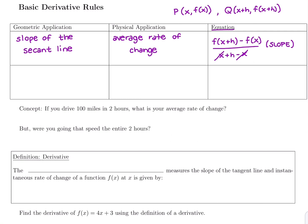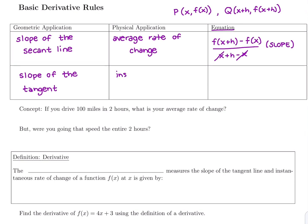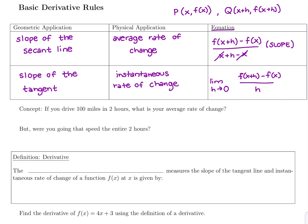Our second set of identical twins — one formula, two different names — is the slope of the tangent line, and we'll also see the term instantaneous rate of change. The formula is the same: f(x+h) minus f(x) all over h, but the difference is we let H go to zero. So we take the limit as H goes to zero of f(x+h) minus f(x) all over h. That is how you find the slope of the tangent line and the instantaneous rate of change.